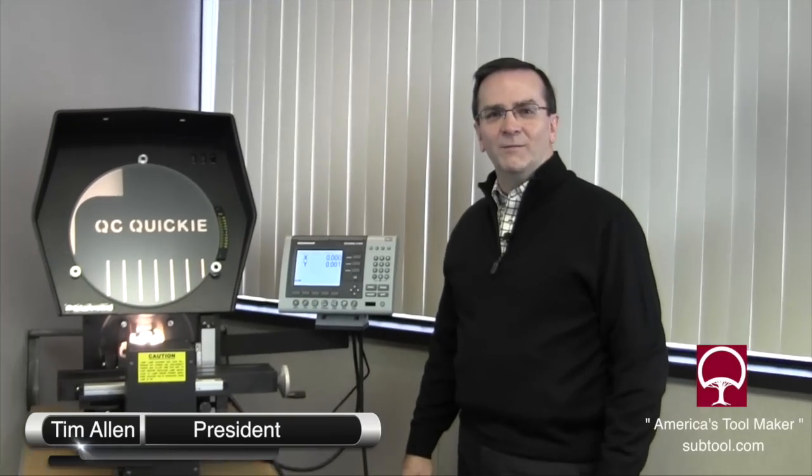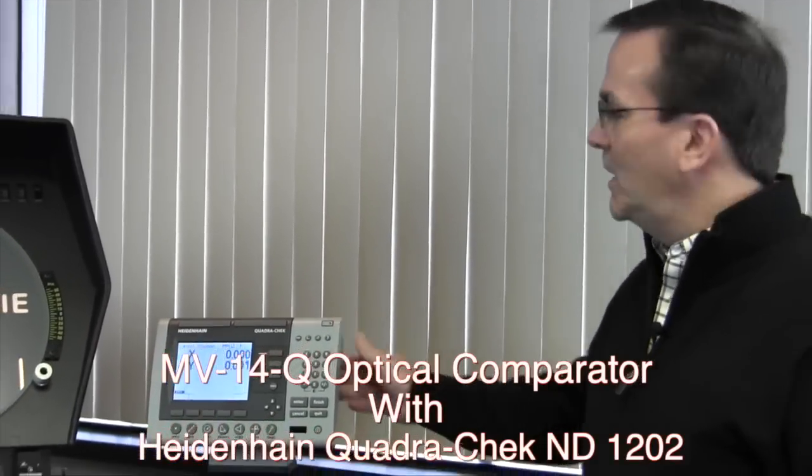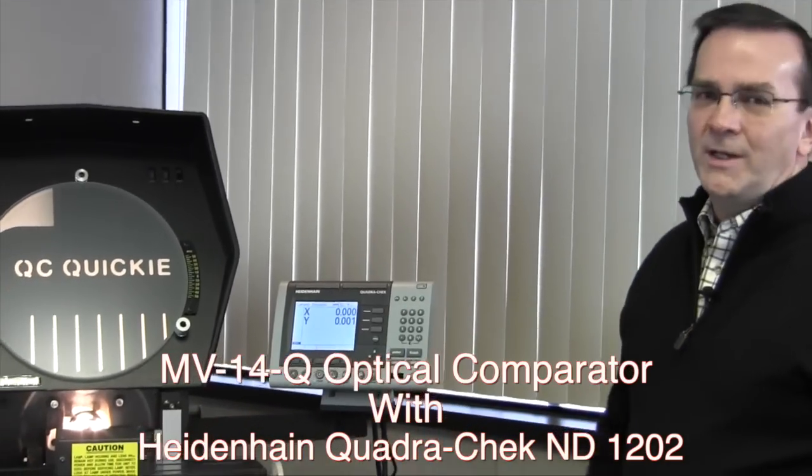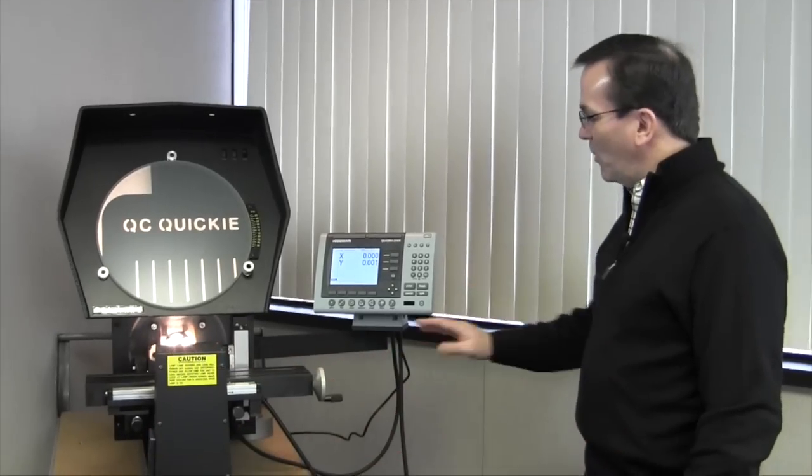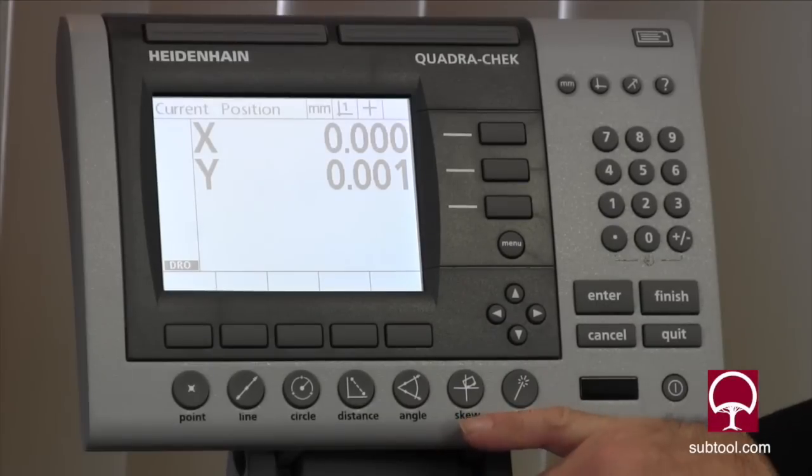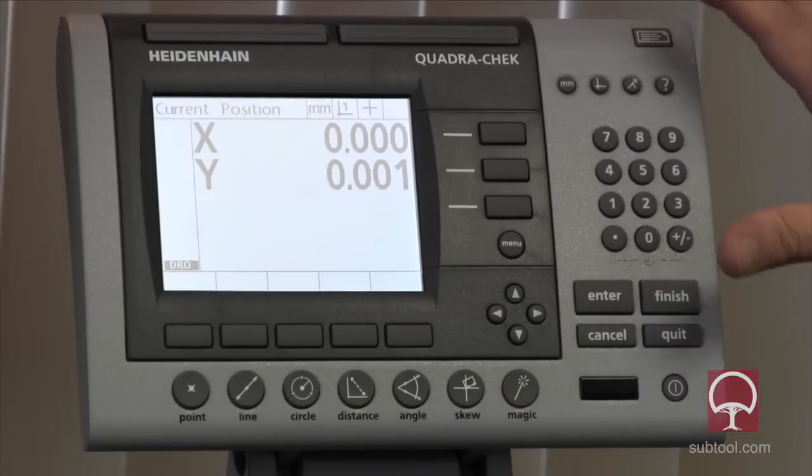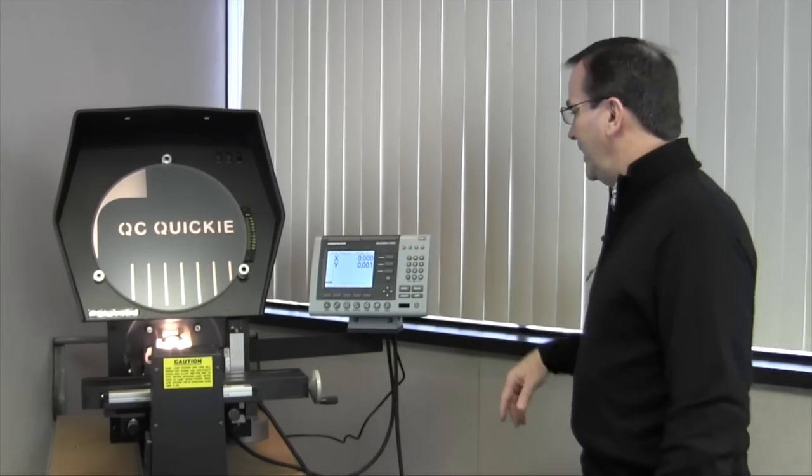Hi, I'm Tim Allen from Suburban Tool, America's Toolmakers, and we're here today to go over some of the features of the Heidenhain Quadra-Chek 1202. This one happens to be mounted on our MV14 comparator, but we're just going to run through the basic features, and we'll also go over a couple of the more advanced technical stuff on here.